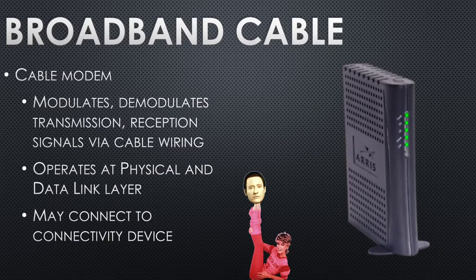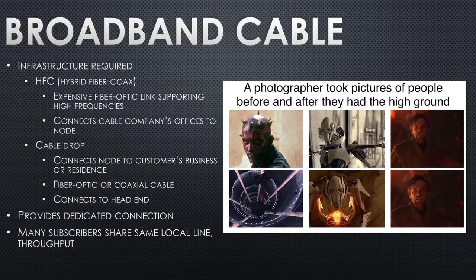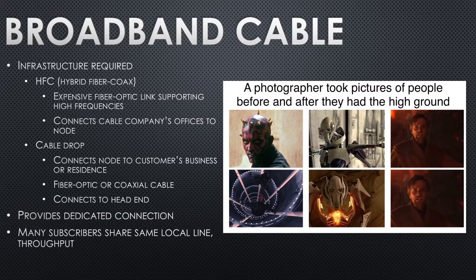The cable modem translates between the coax cable and your regular local network — Wi-Fi router or whatever — and operates at the physical and data layer. The infrastructure requires coax and ideally fiber links supporting it, because cable goes faster than DSL and needs a bigger internet pipe. Everyone in the neighborhood technically shares the same piece of the internet pie — it's a dedicated connection to a shared pool.